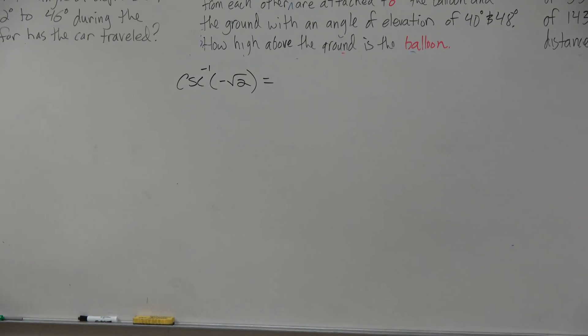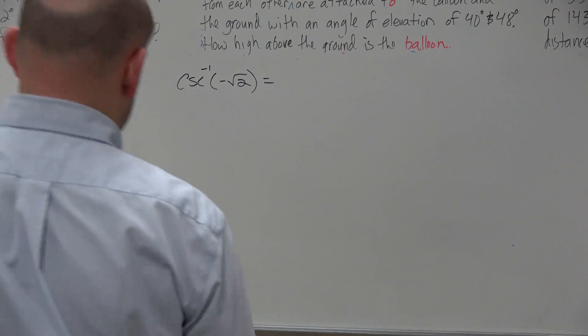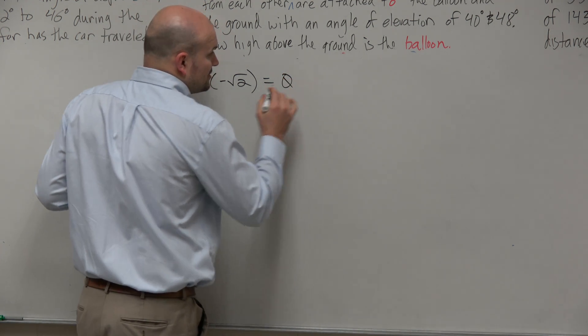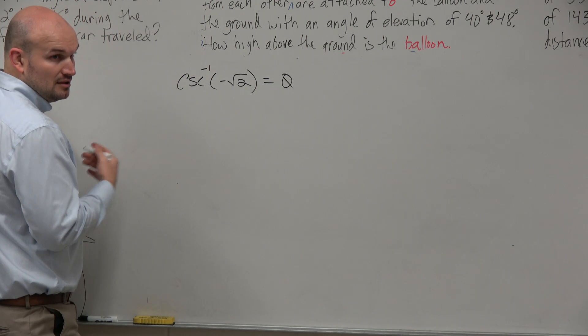I don't like that at all. So when we're looking at this problem, what we're basically trying to understand is the cosecant inverse of negative √2 is basically saying, what is going to be the angle? That's what we're trying to find.